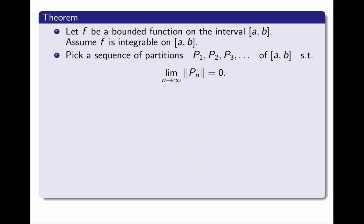Let's pick a sequence of partitions P₁, P₂, P₃, and so on, whose norms approach 0 as n approaches infinity. For example, the simplest choice is to take Pₙ to be the partition that breaks [a, b] into n subintervals of equal length.